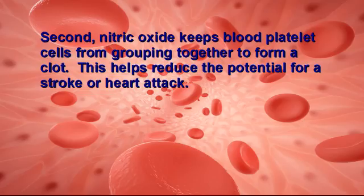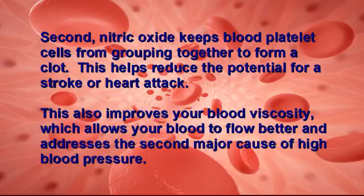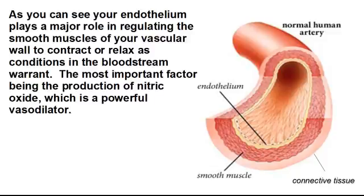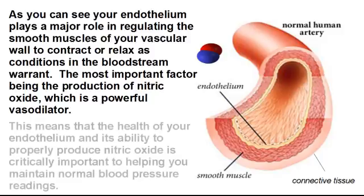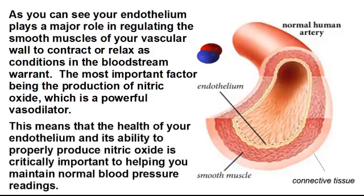Second, nitric oxide keeps blood platelet cells from grouping together to form a clot. This helps reduce the potential for a stroke or heart attack. This also improves your blood viscosity, which allows your blood to flow better and addresses the second major cause of high blood pressure. Your endothelium plays a major role in regulating the smooth muscle of your vascular wall to contract or relax as conditions in the bloodstream warrant. The most powerful factor is the production of nitric oxide, which is a powerful vasodilator, meaning the health of your endothelium and its ability to properly produce nitric oxide is critically important in helping you maintain normal blood pressure readings.